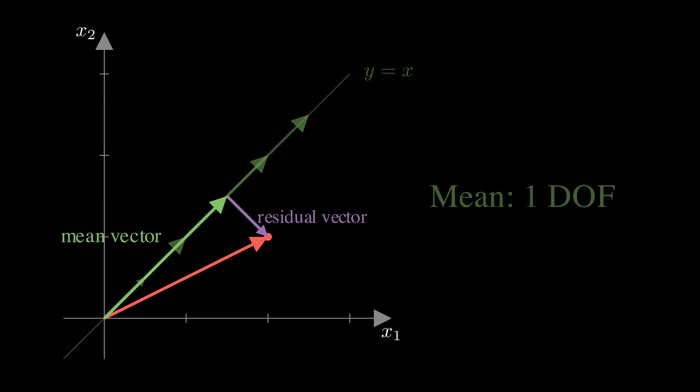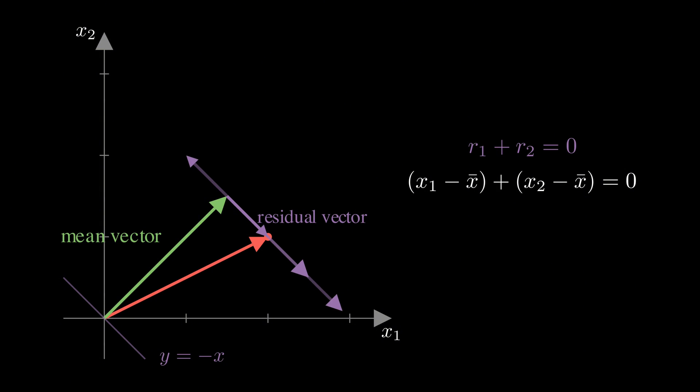The residual vector has its own constraint too. And this is the key insight, residuals always sum to zero. Think about it, if the mean is truly in the middle of your data, then some points are above it with positive residuals, and others are below with negative residuals, and they perfectly cancel out.